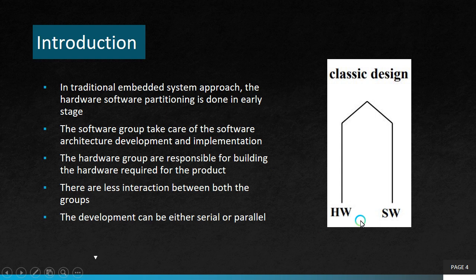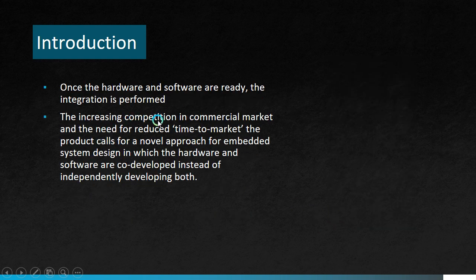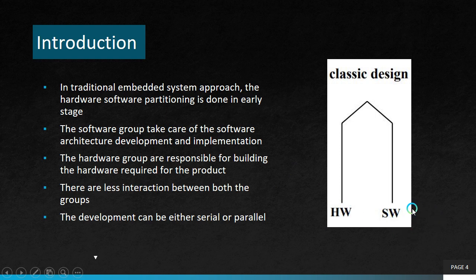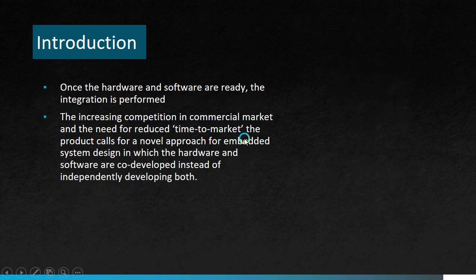Once hardware and software are ready, the integration is performed. However, increasing competition in the commercial market and the need for reduced time-to-market calls for a novel approach for embedded system design. When hardware and software are developed independently and then integrated together, there will be many bugs and errors to fix. If there is an error in the hardware part, we need to go back to the initial state and pass through all phases again, which is time-consuming. This is why we use a co-design approach where hardware and software are co-developed instead of independently developed.